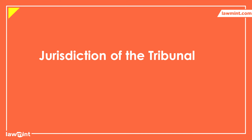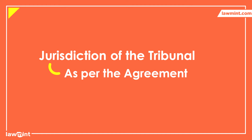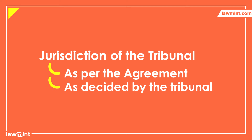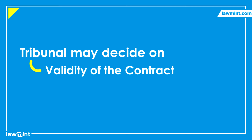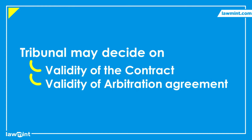Moving on to the jurisdiction of the tribunal, the primary factor which decides the jurisdiction is the original agreement. Within the scope of the original agreement, the tribunal or the arbitrator can determine their own jurisdiction and adjust it to meet the objectives of the arbitration and the needs of the parties. Once the arbitration tribunal is established and starts the process, it can decide on the validity of the original contract and also on the existence or validity of the arbitration agreement. Even if the original agreement is deemed null and void, the arbitration clauses continue to exist as a separate agreement and the arbitration will continue.